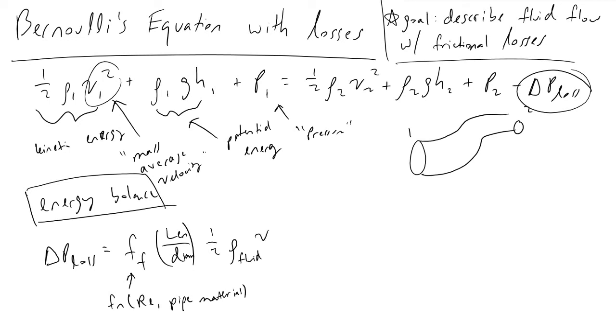And the reason we use these kind of mass average velocities is because mass is conserved in all of our systems, and that's what helps our energy balance remain intact when we're performing these kinds of analyses.